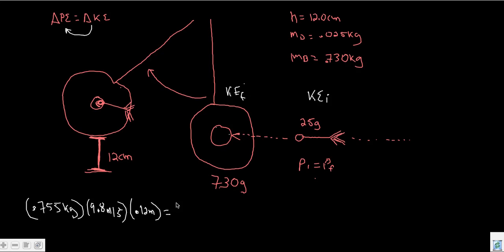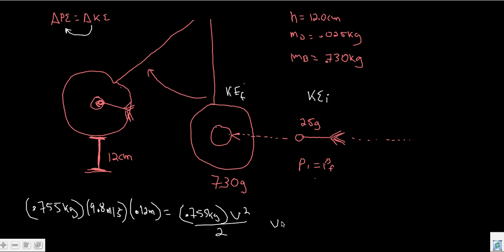So we set kinetic energy equal to potential energy: one-half mass times velocity squared equals mgh. Our combined mass is 0.755 kilograms and our velocity is unknown. So I'll multiply the potential energy out, then multiply by two, divide by 0.755, and take the square root — that's simple algebra to figure out what this velocity is.